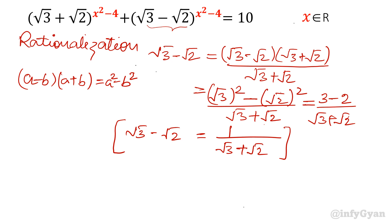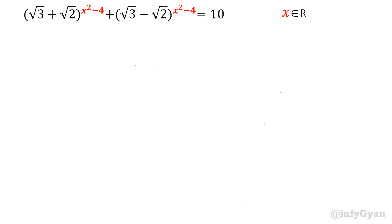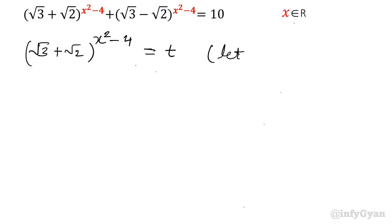Now let us write (√3 + √2)^(x² - 4) + 1/(√3 + √2)^(x² - 4) = 10. Using the rationalization result for the second bracket, we substitute t = (√3 + √2)^(x² - 4). So the equation converts to t + 1/t = 10.